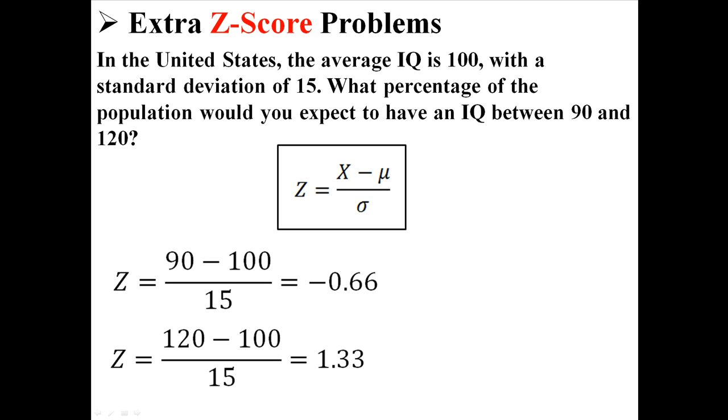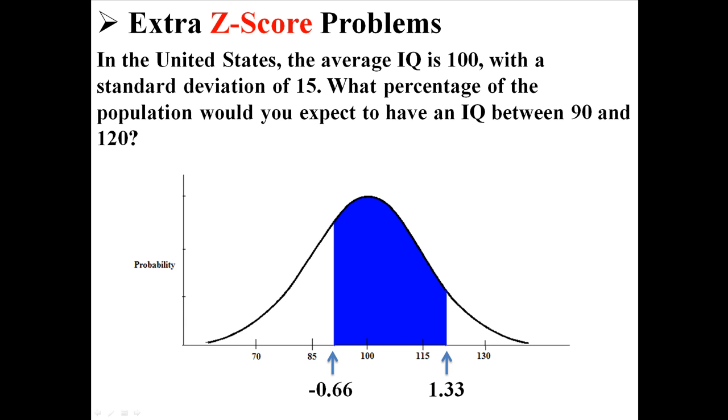So the score of 90 is 0.66 standard deviations below the mean. And the score of 120 is 1.33 standard deviations above the mean. So now you can see those two scores are associated with 90 and 120.